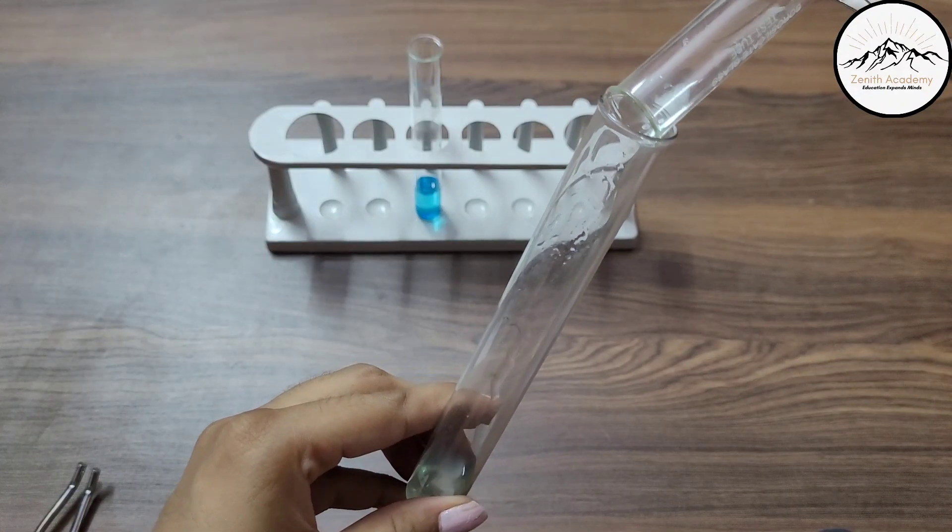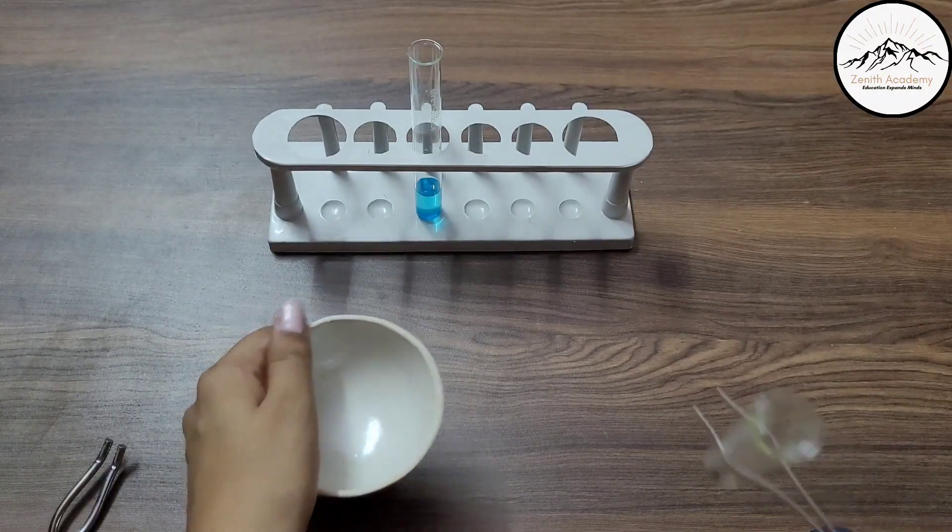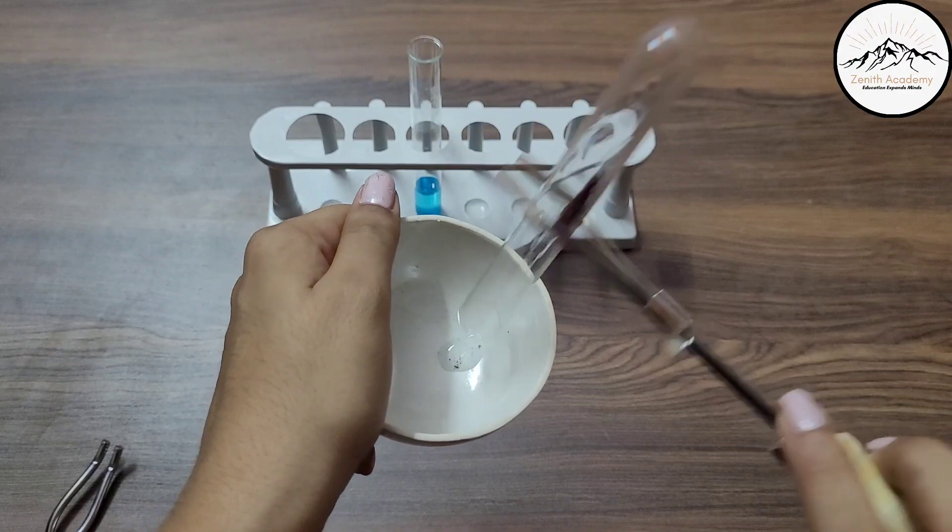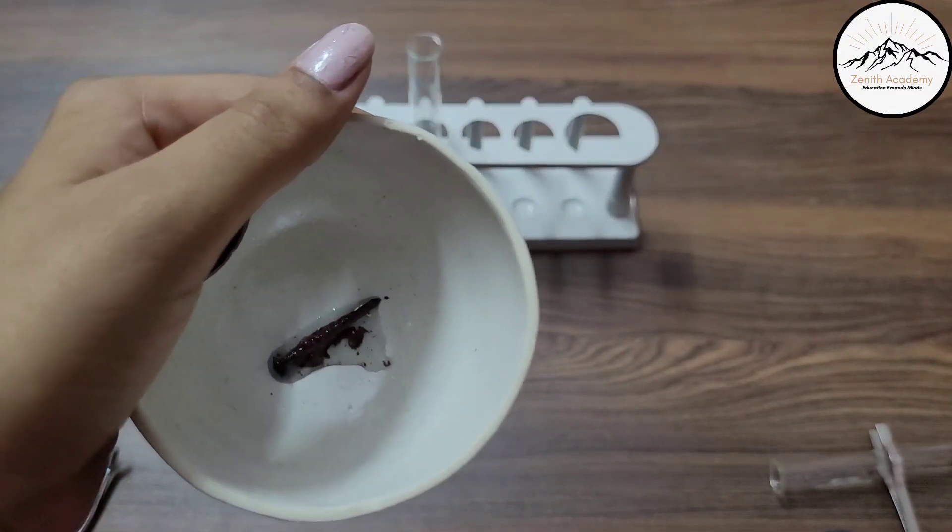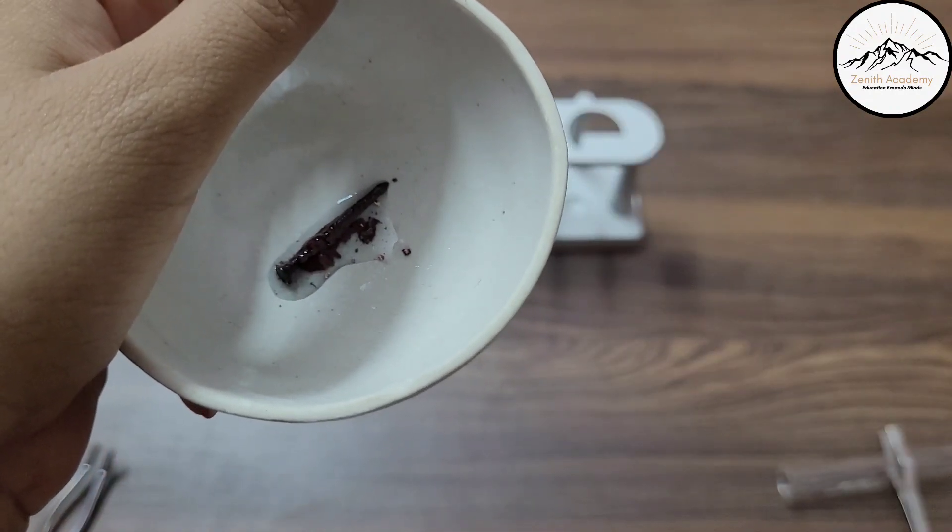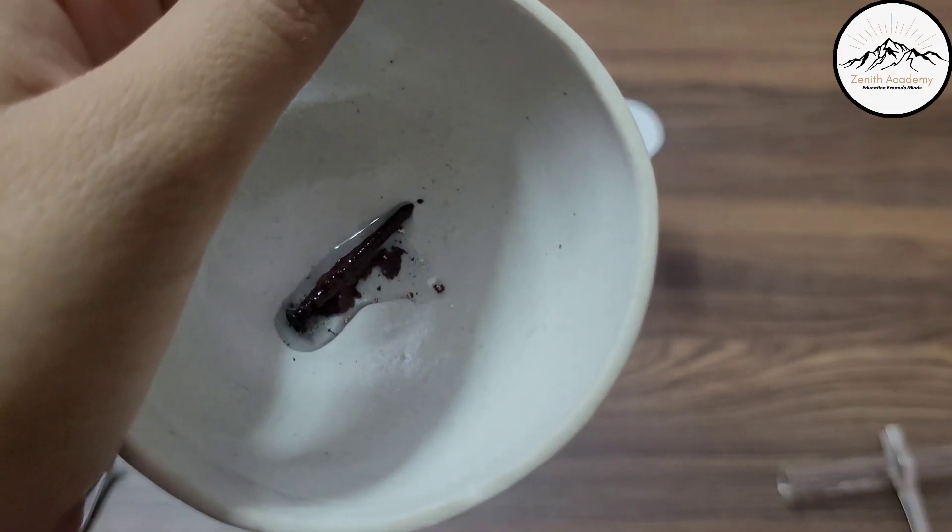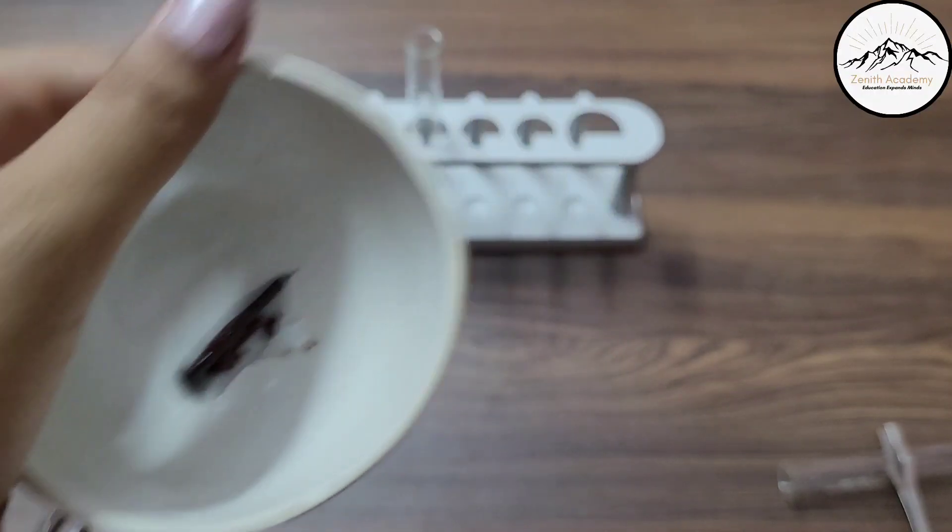So I am taking out the solution. See it is slightly greenish in color. And I will take out the nail and show it to you. There is a deposition of copper over it. Over the iron nail. So you can see this glittery brown color over the iron nail that is copper.